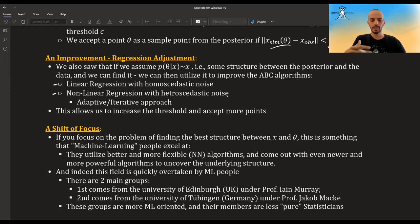But then there was also a nonlinear regression with heteroscedastic noise, which used neural networks to fit both the function, the mean, and the variance. And there was also an iterative approach, an adaptive approach, which improved this even better. But what all of these improvements do is they allow us to increase the threshold and accept more points.